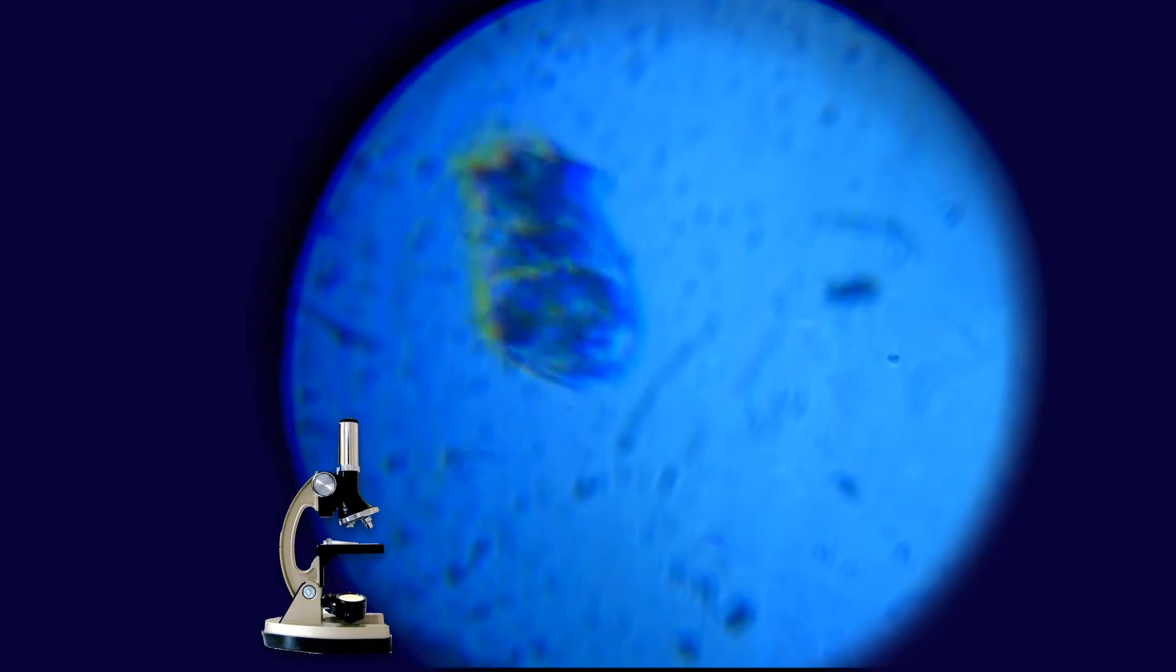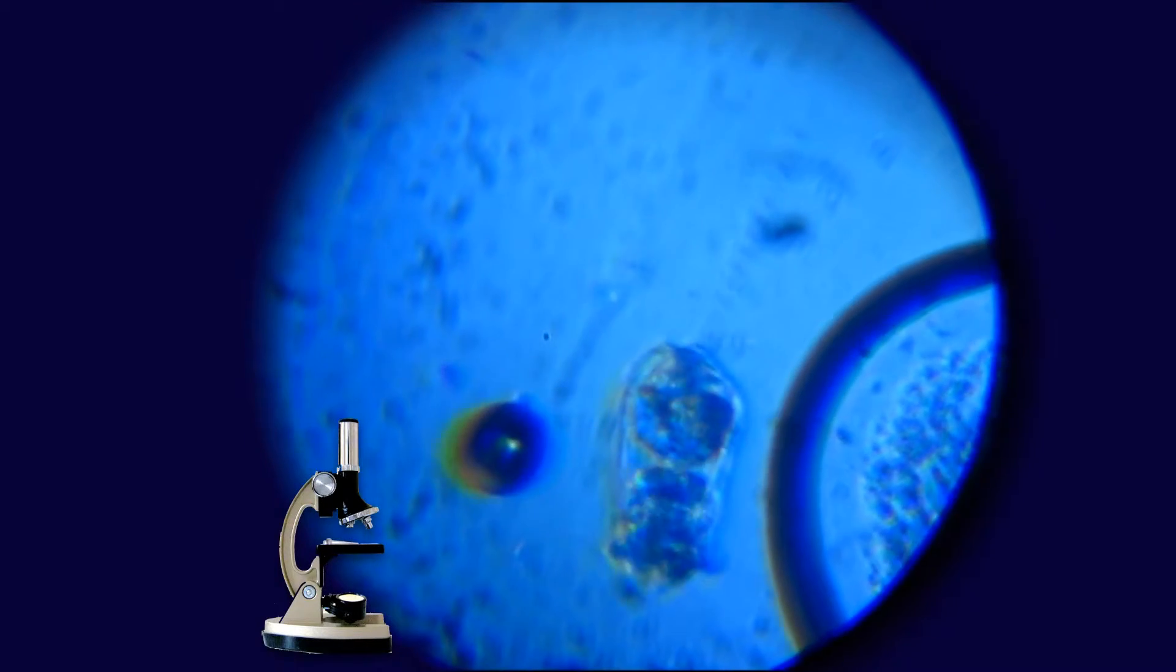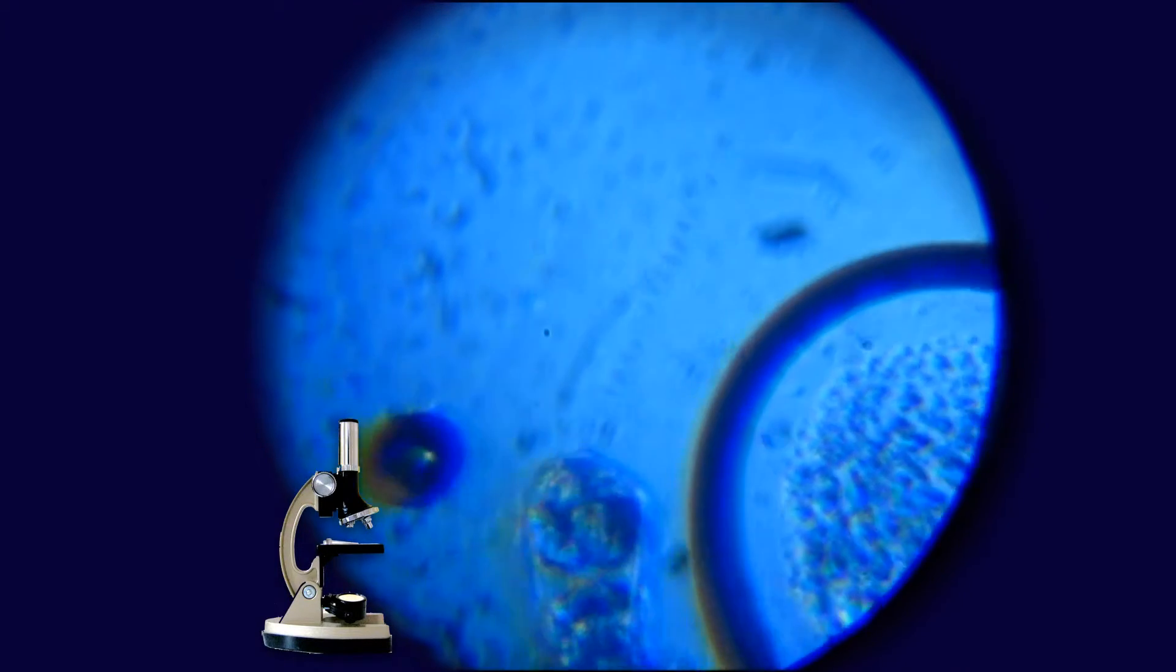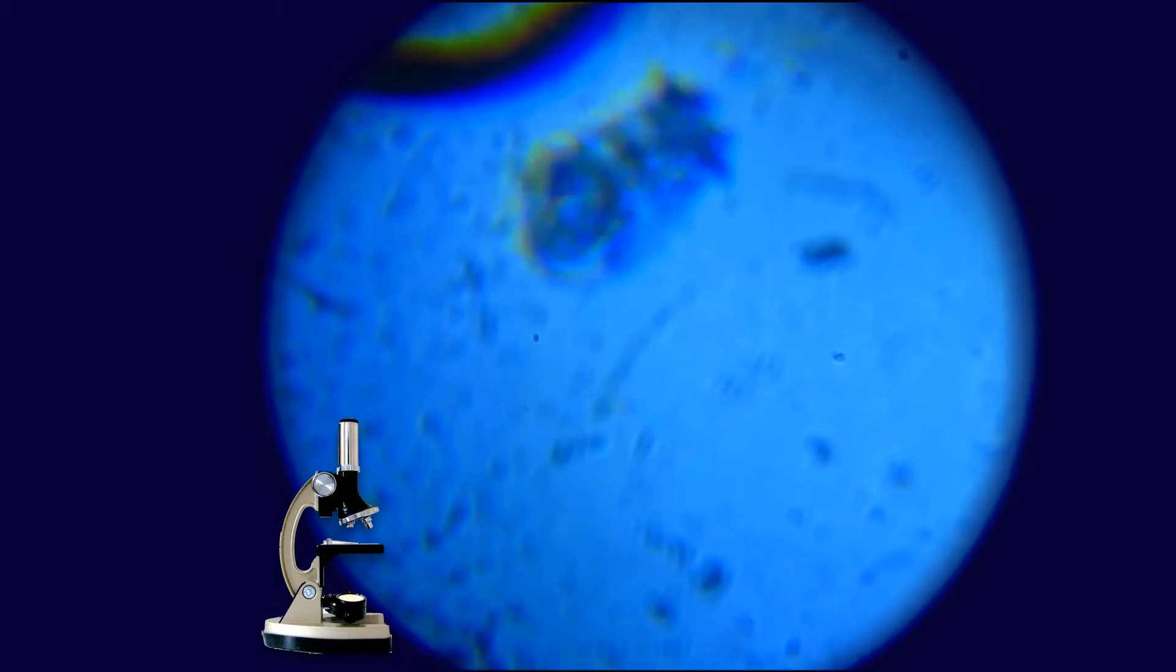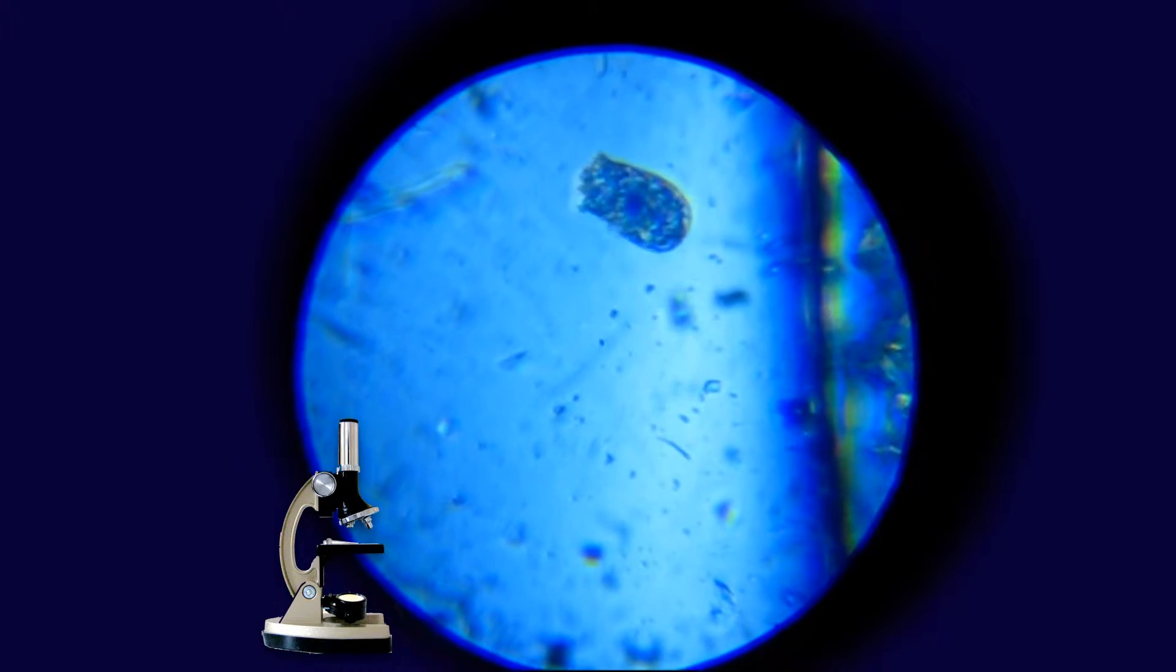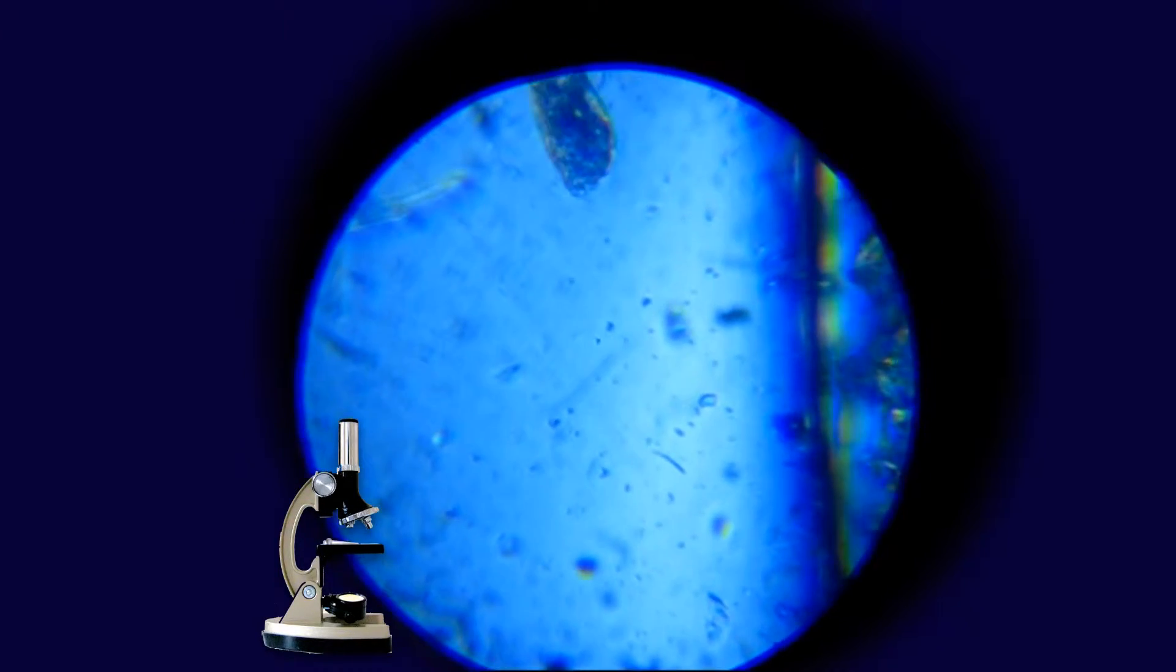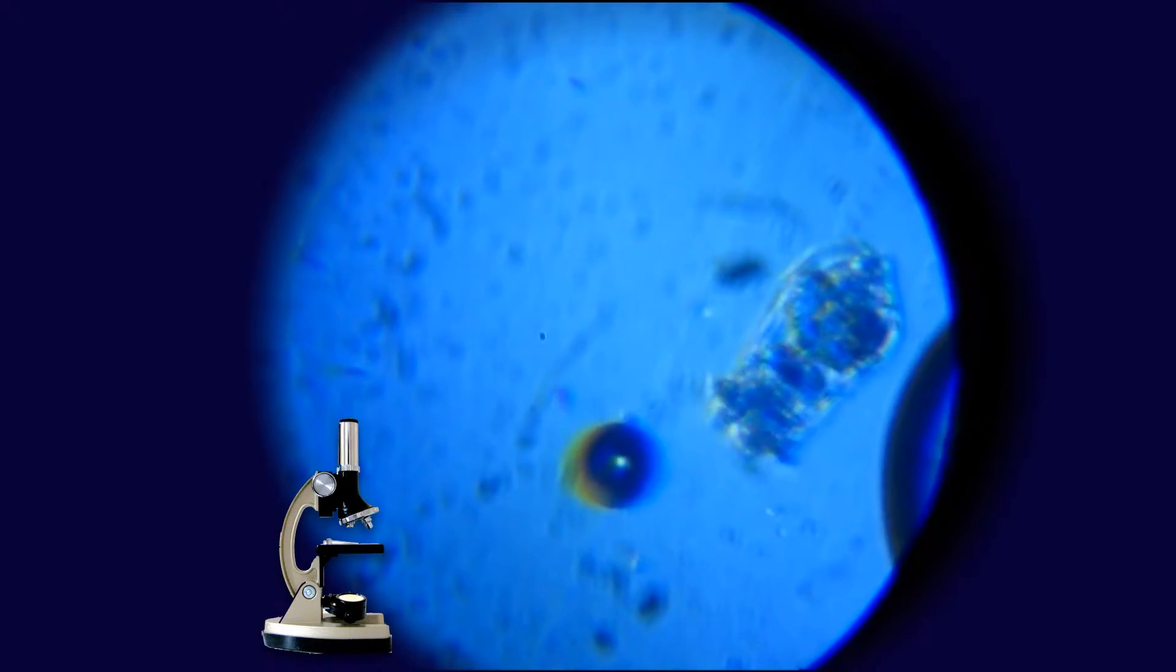Wow. Isn't it crazy to think that in a drop of water that looks just, well you can't see anything in it, there are actual animals swimming around that are so small you would never know they were there. Yet with a microscope you can look at them. Look, you can see their insides moving. They're just completely see-through.